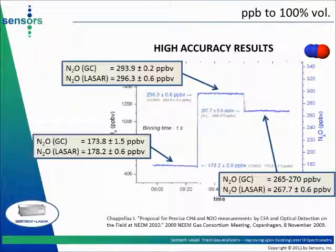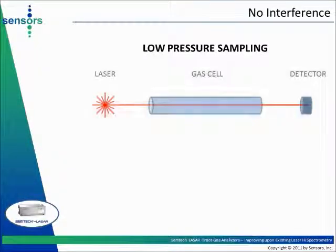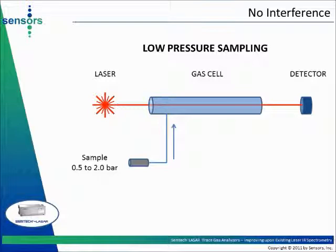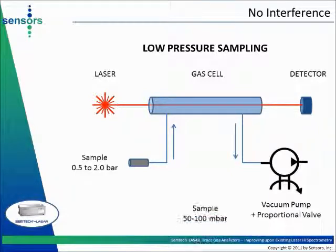Signal integration time was only one second in this experiment. The Semteklas R relies on low-pressure sampling and very high-resolution spectroscopy to minimize interferences in the measurement. In its standard configuration, the Semteklas R accepts gas sample pressures at the sample intake point ranging from 0.5 to 2.0 bars. A vacuum pump draws the gas sample through a critical orifice, lowering the pressure inside the entire gas flow sampling assembly to typical values of 50 to 100 millibar. A proportional valve enables pressure regulation at 0.1 millibar throughout the sample system.